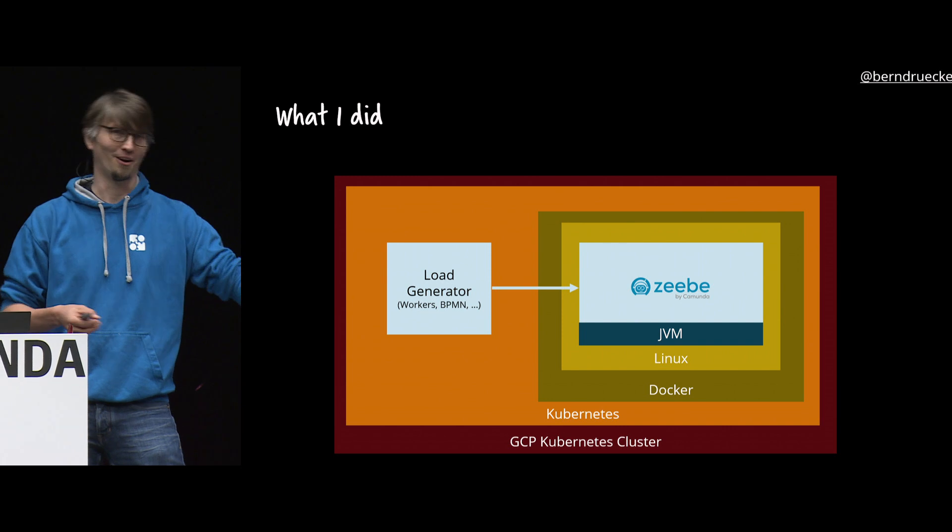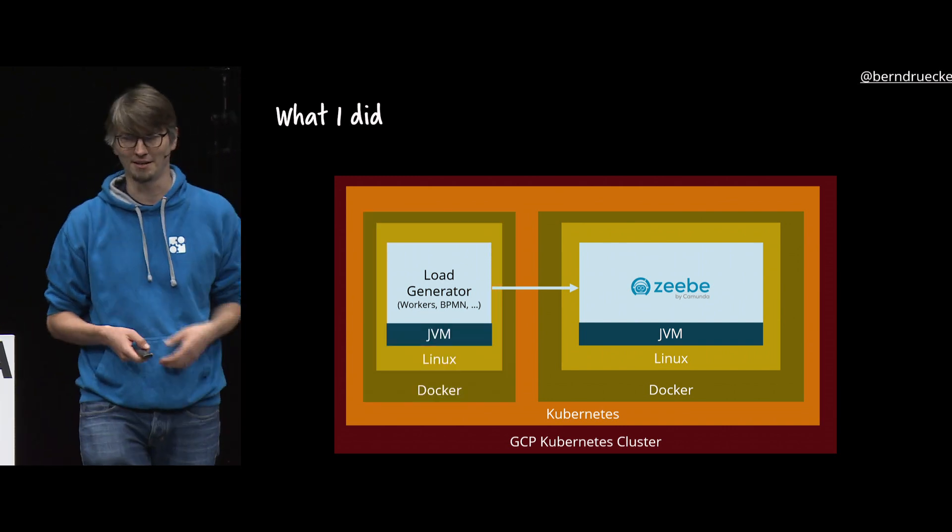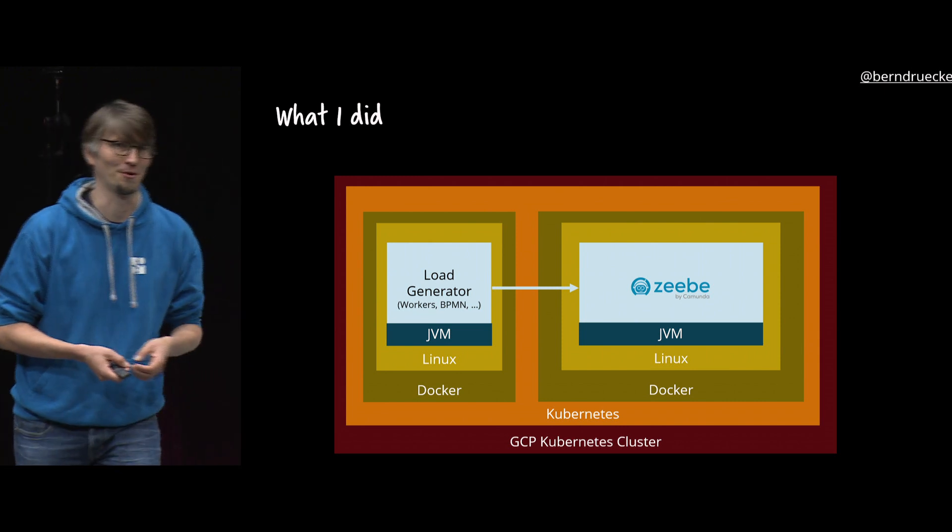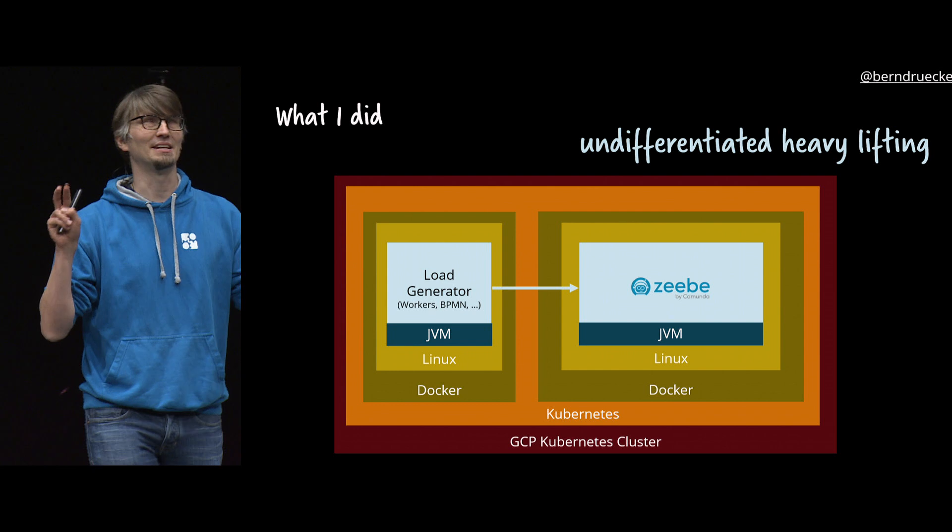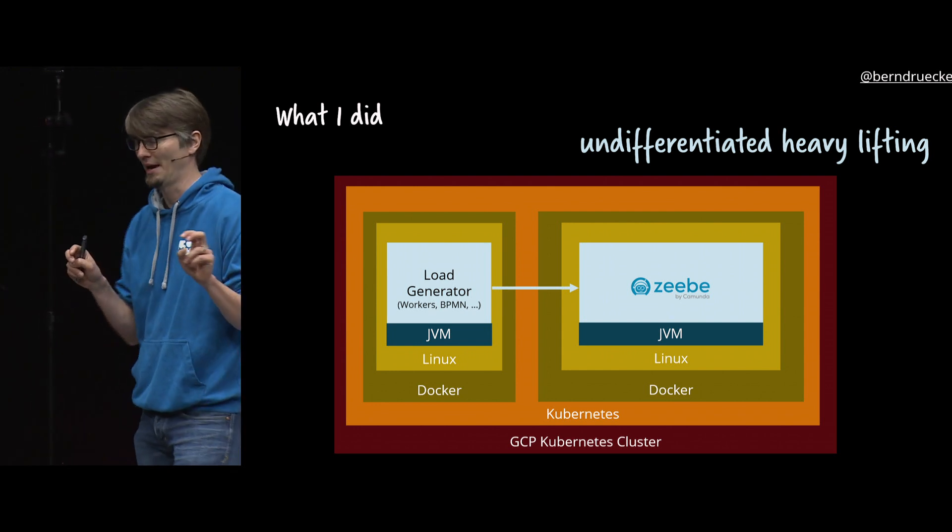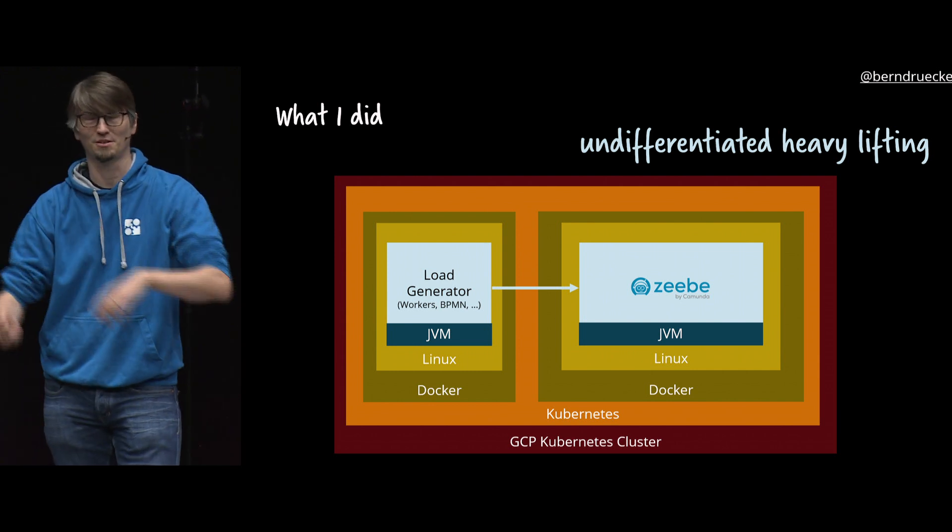And that didn't stop there. Then I had the load generator. Okay, that also has to go to the cloud, so I need a JVM, I need a Docker container which has a Linux and Kubernetes and so on and so forth. You get the idea. And that's what's referred to as that undifferentiated heavy lifting.